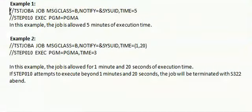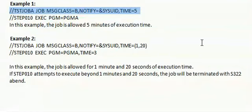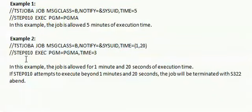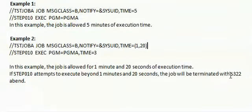In the first example, the time value is 5, so the job will allow 5 minutes of execution time. If it takes more than that, the job will be abended with S322. In the second example, the time value is 1,20, so the job is allowed 1 minute and 20 seconds for execution. If step 010 attempts to execute beyond 1 minute and 20 seconds, the job will be terminated with S322 abend — this is a timeout abend.